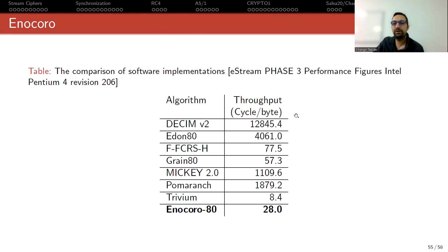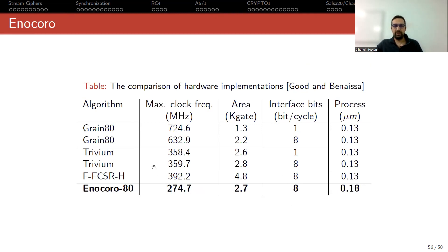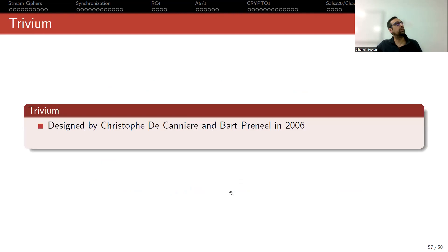They show that their throughput, measured in cycles per byte, is really small compared to most of the eStream finalists and other standards. They cannot beat Trivium, but they beat the others. They also provide a comparison of hardware implementations, and as you can see, it requires a small amount of area. Using different technologies is not the best way to compare results, but still it requires small area on hardware.